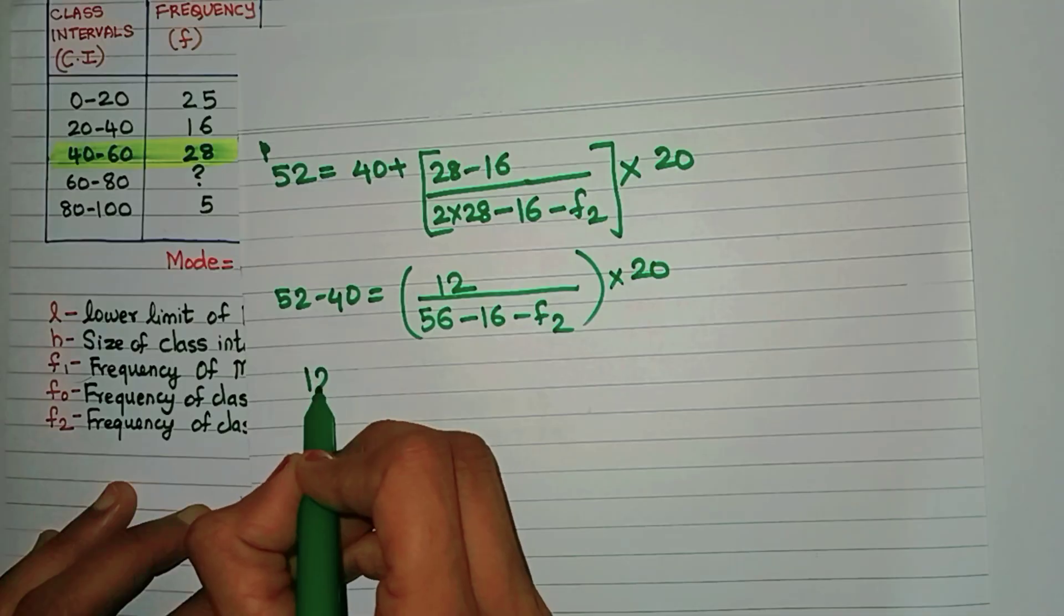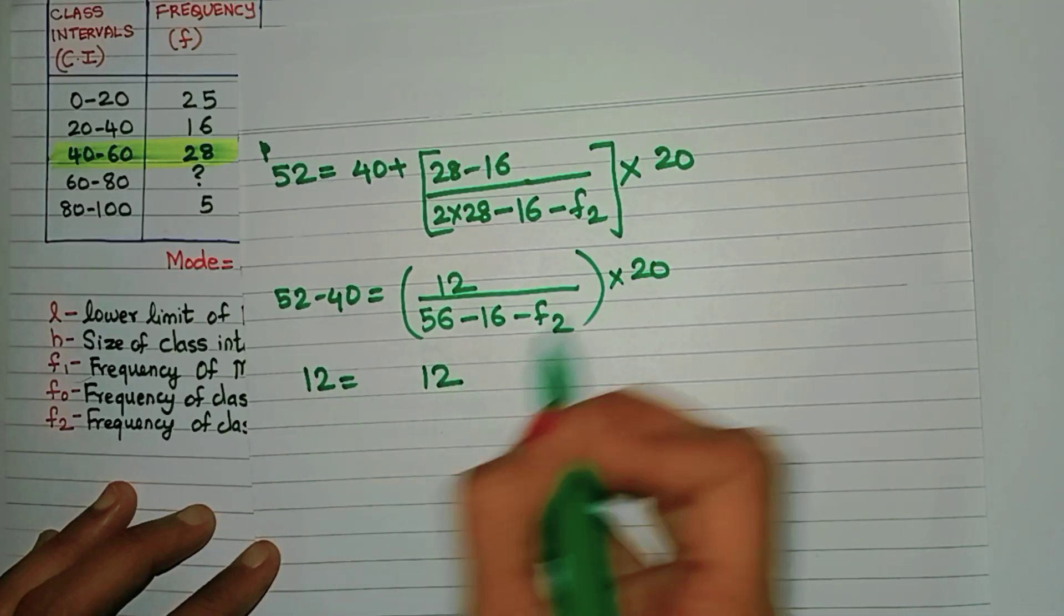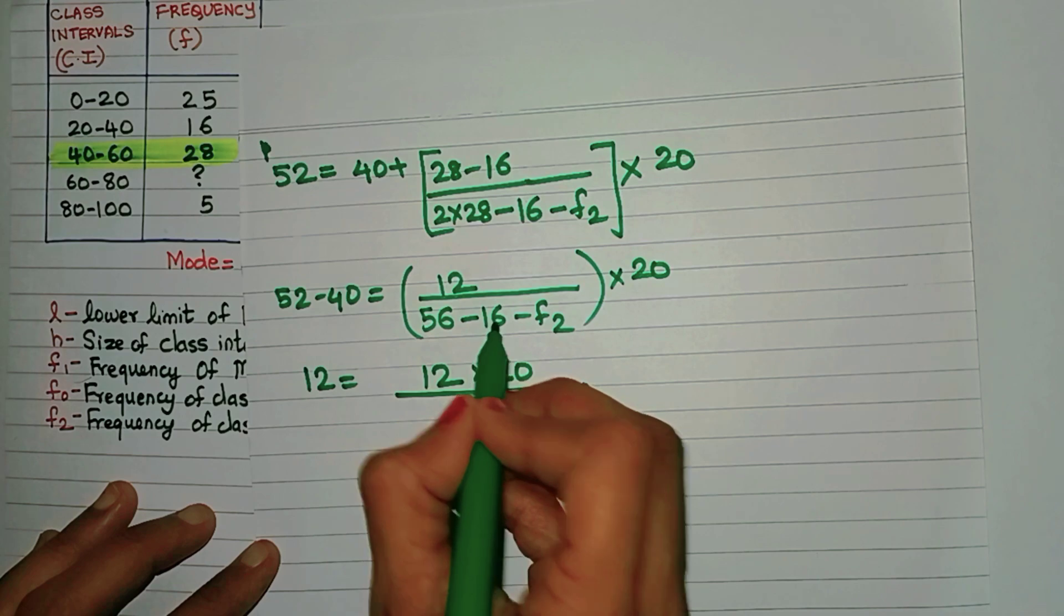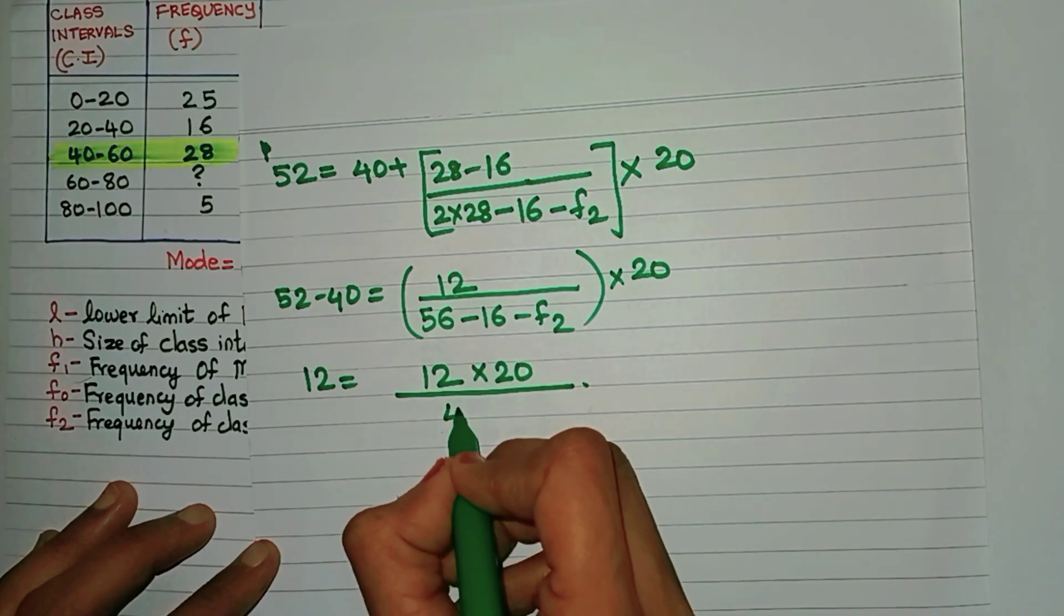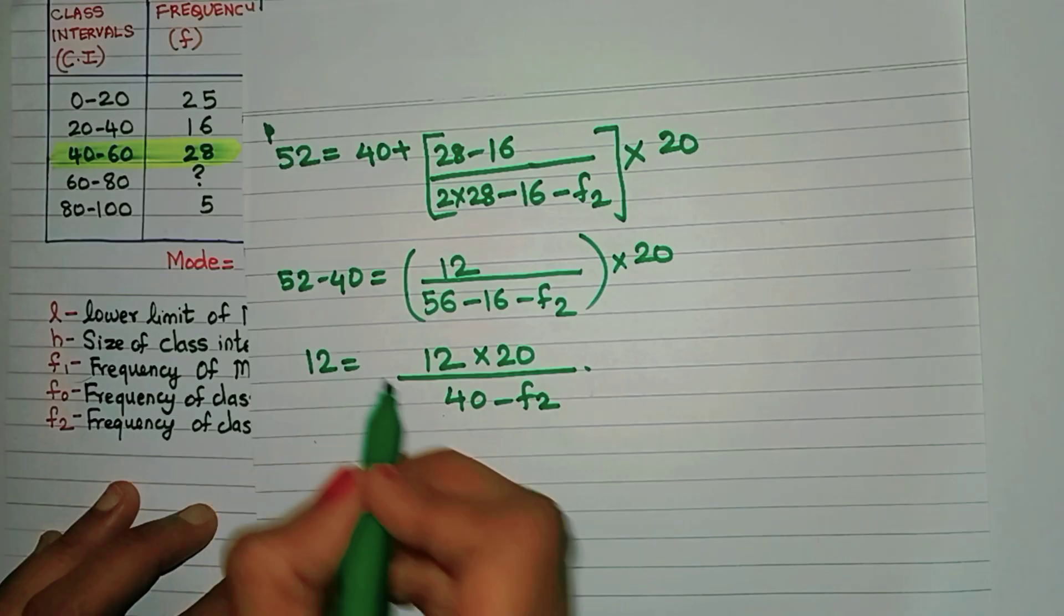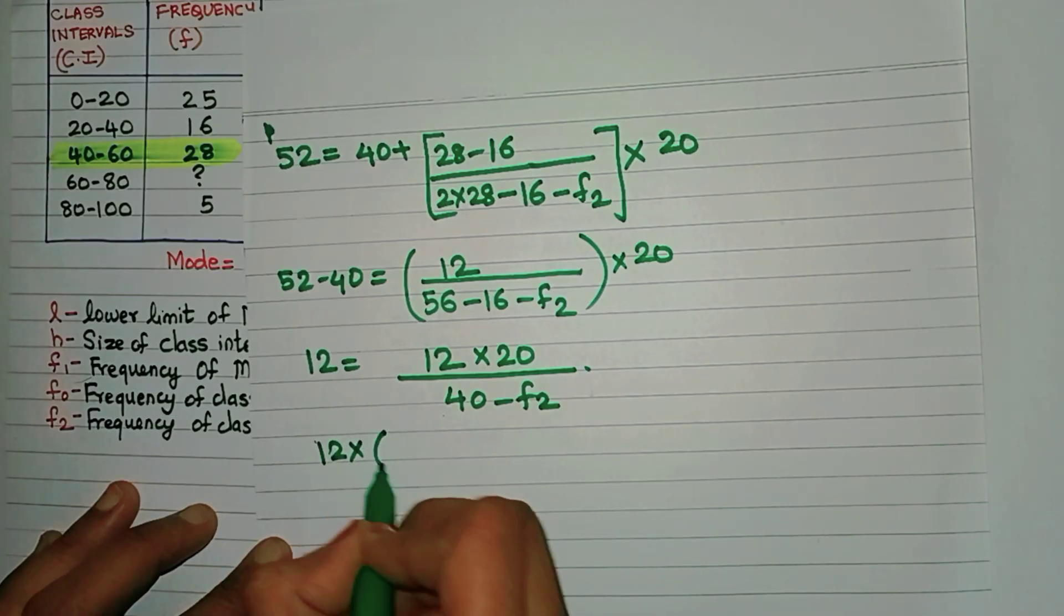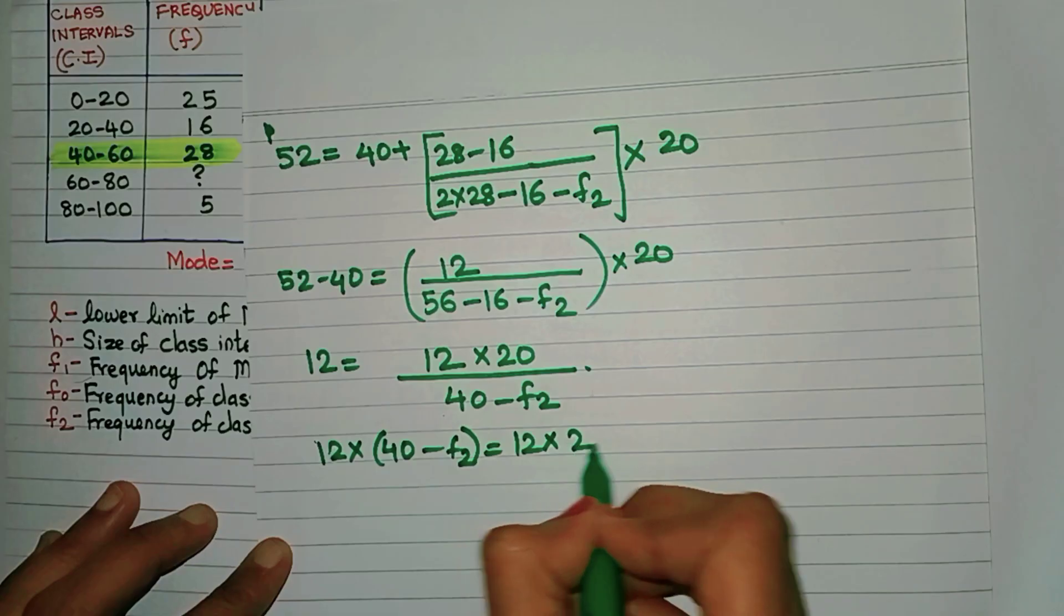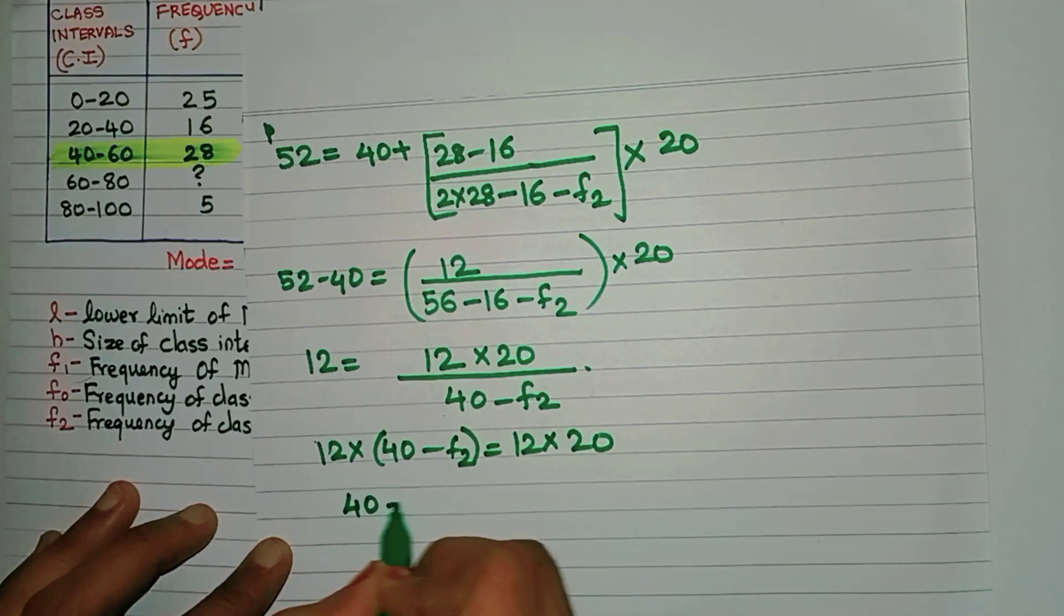So 52 minus 40, that will give me 12. Now 12 times, I can always write 20 in the numerator. Now 56 minus 16. Yes, that is 40 minus F2. So now let me just bring F2 to the other side. So this is what we get. Just slowly do all the calculations. So let me bring the 12 to the other side.